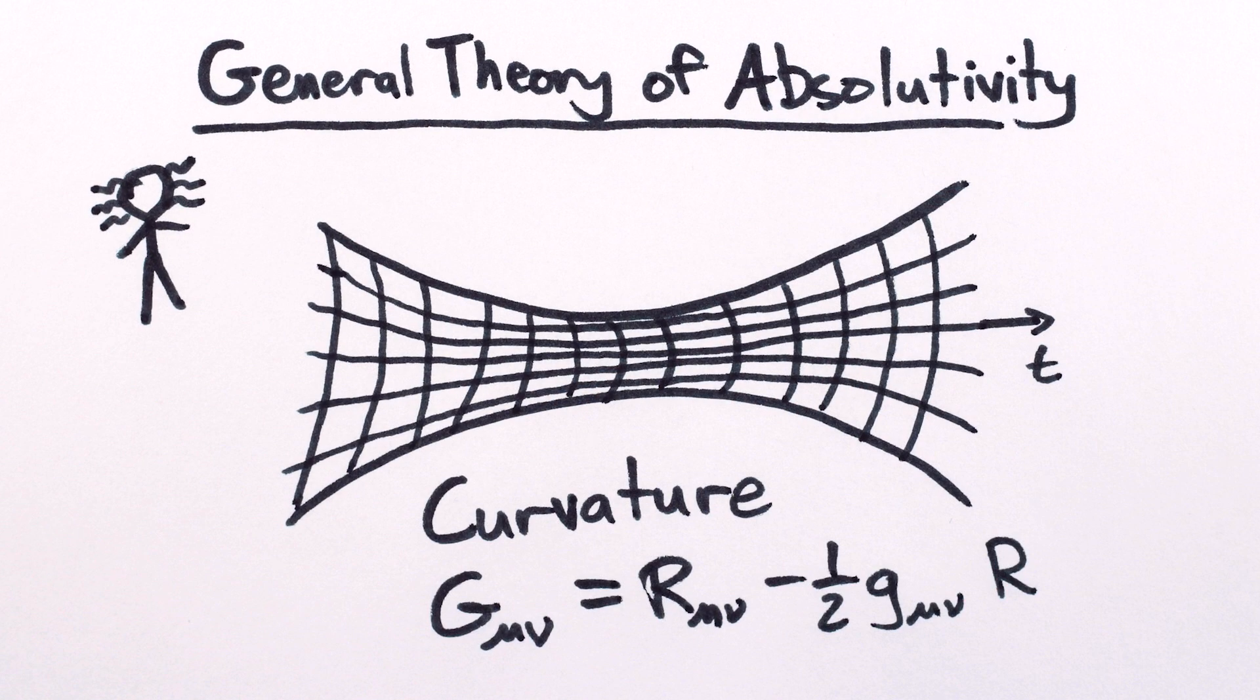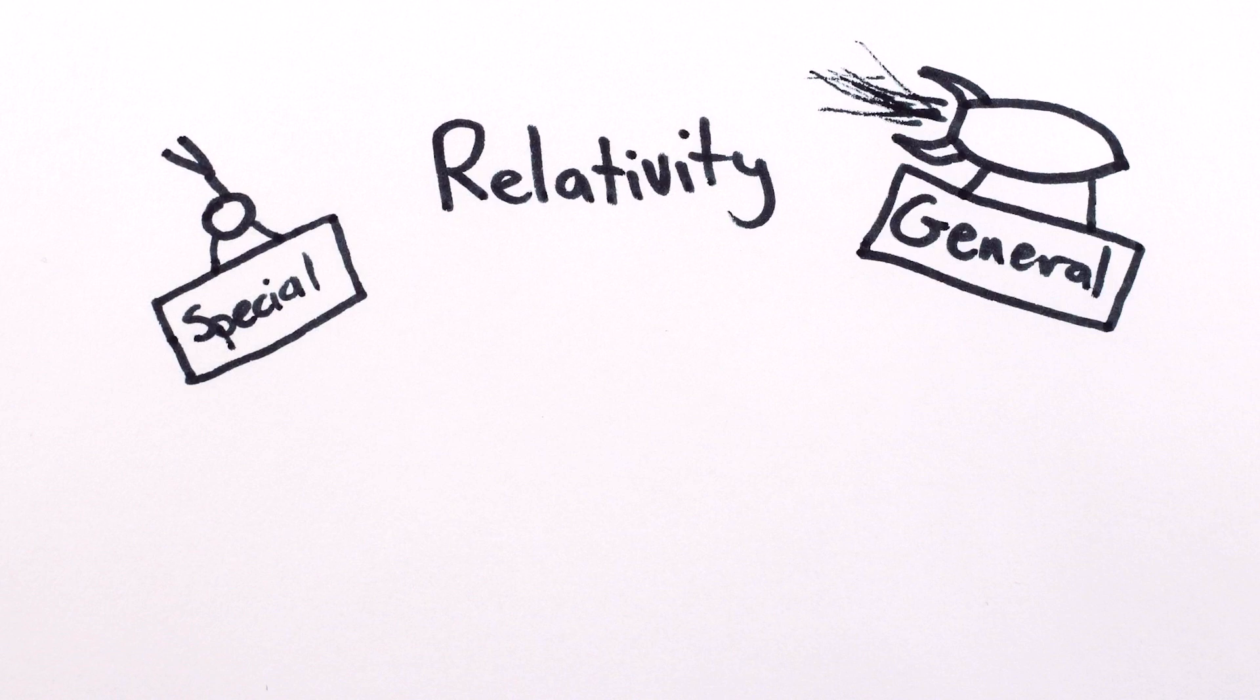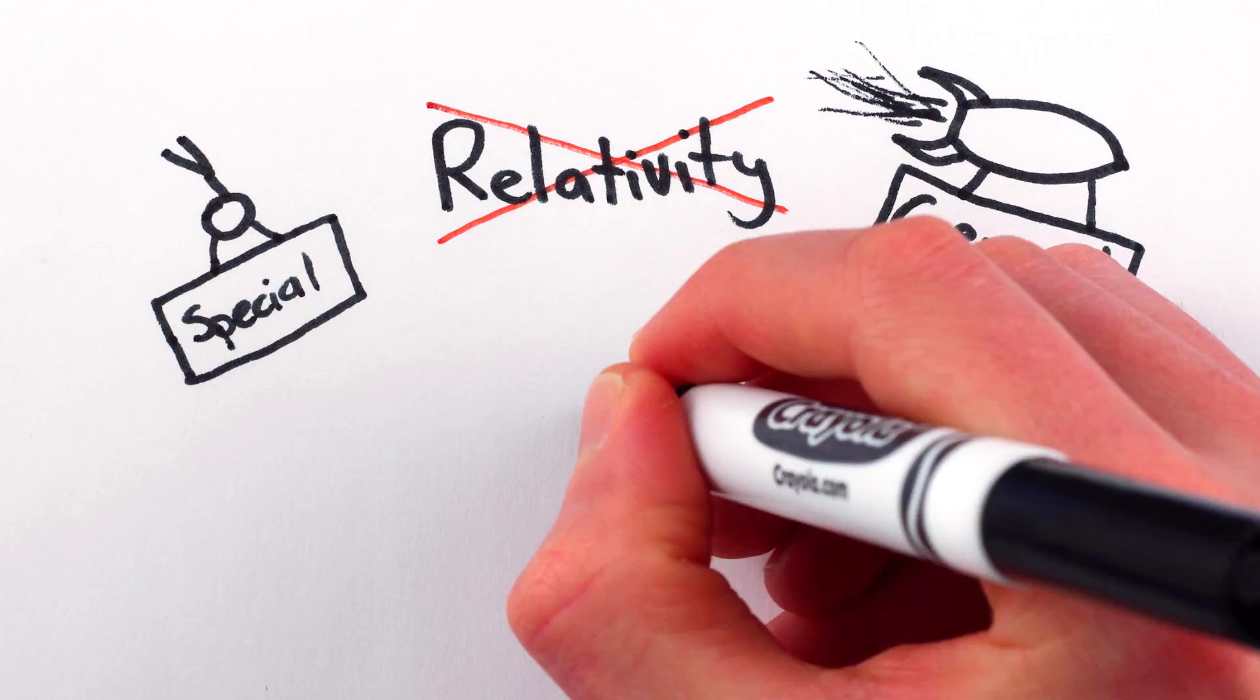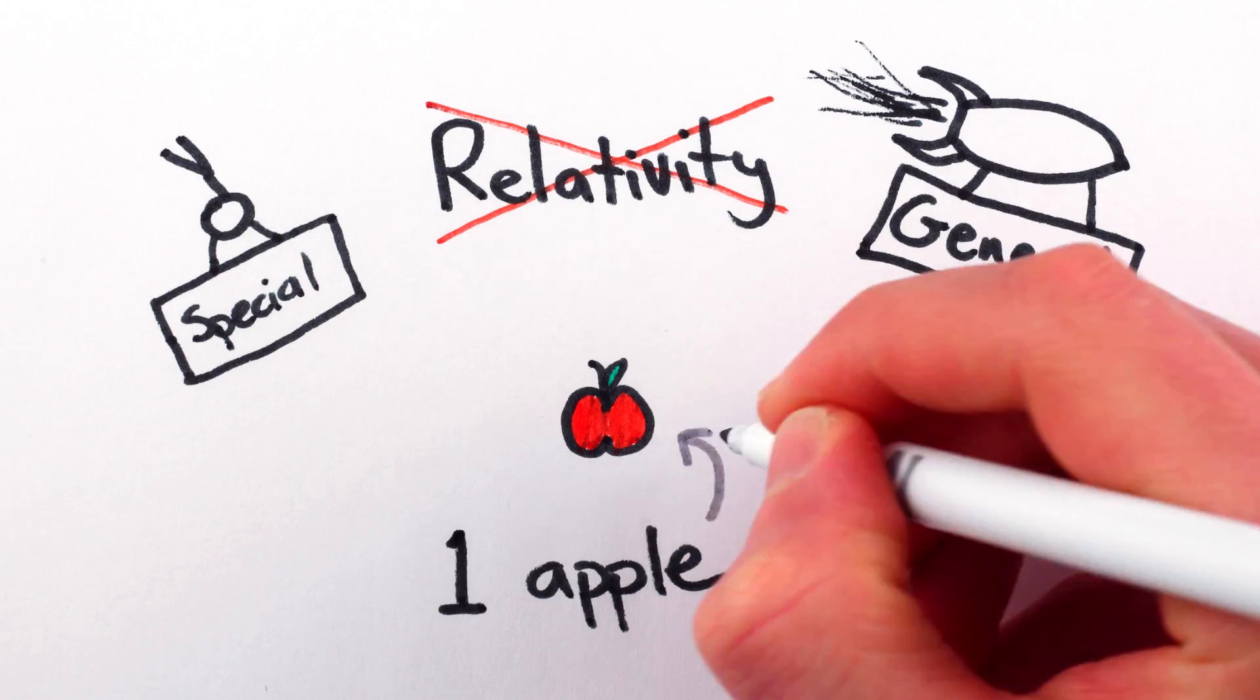Special and general relativity are, at their core, not about what's relative. They're about what's real, irrespective of perspective.